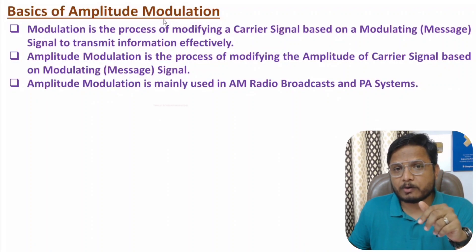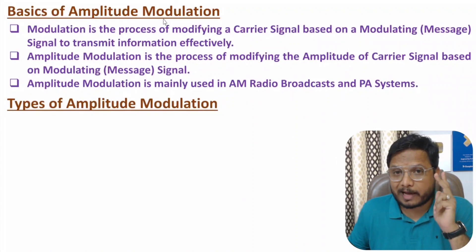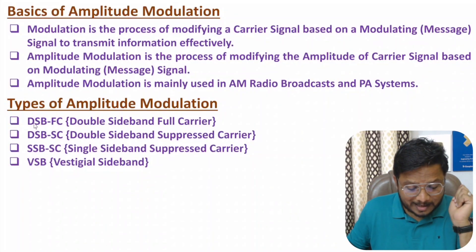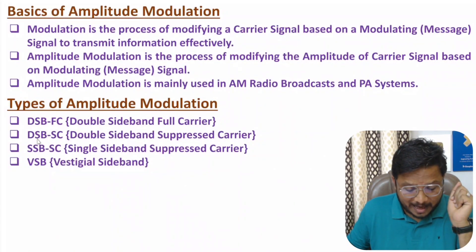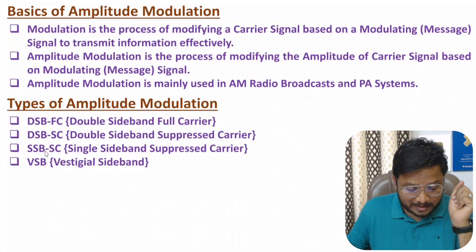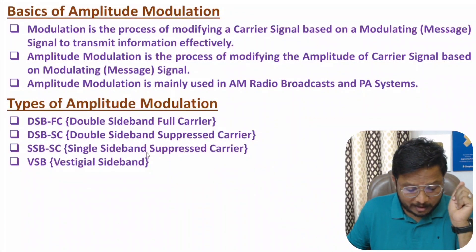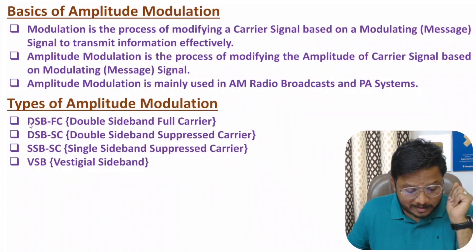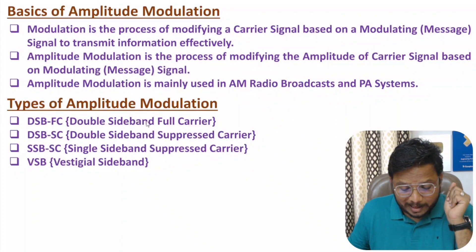Now let me discuss about different types of amplitude modulation. In general, there are four categories. First one is DSBFC — double sideband full carrier. Second one is DSBSC — double sideband suppressed carrier. Third one is SSBSC — single sideband suppressed carrier. And fourth one is VSB — vestigial sideband. In this video, I will explain DSBFC, that is double sideband full carrier.